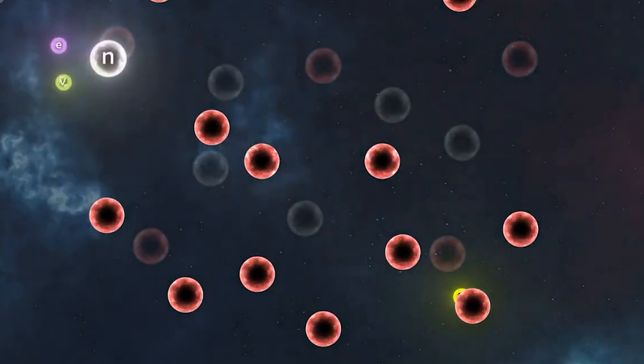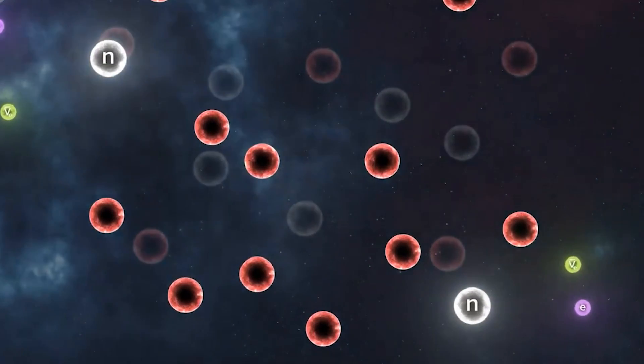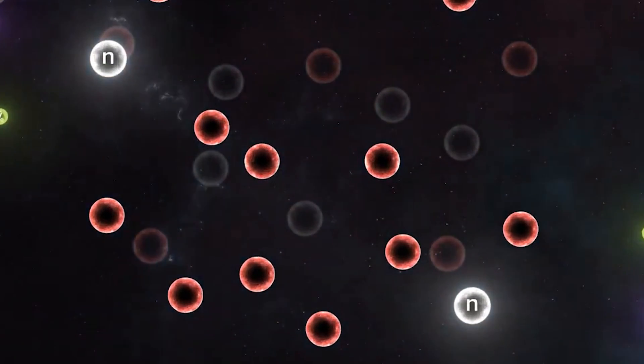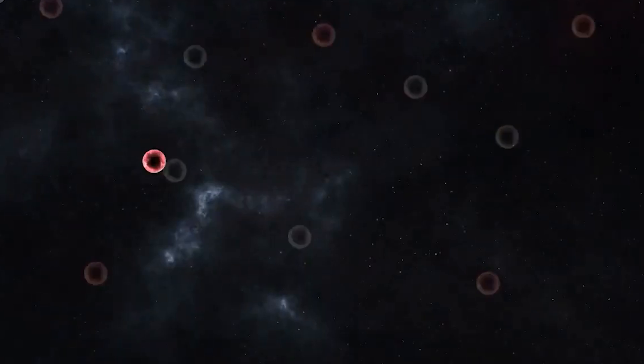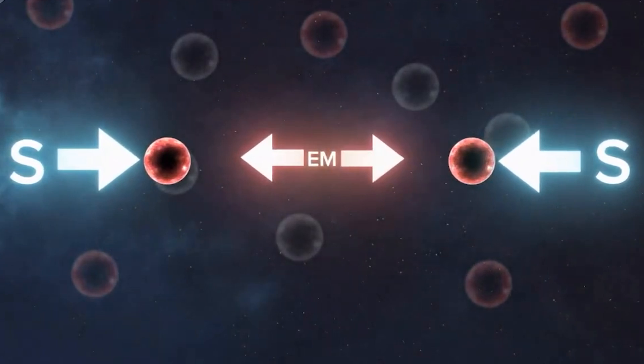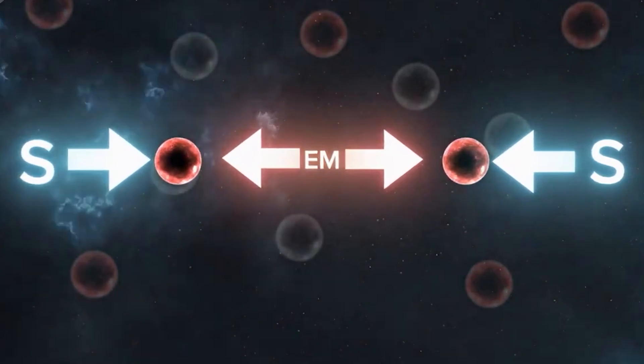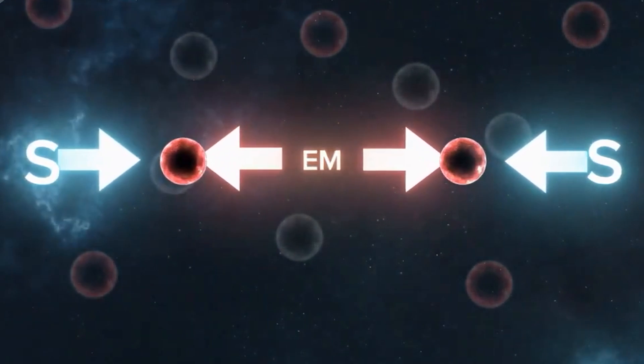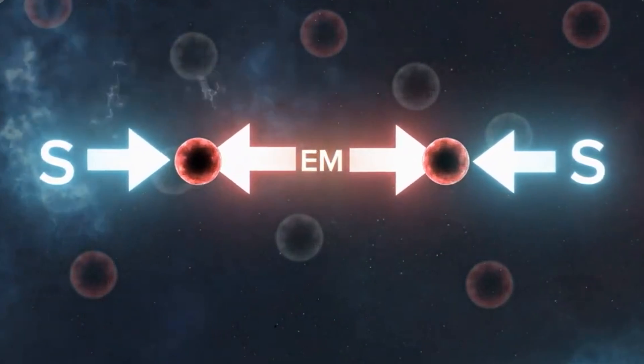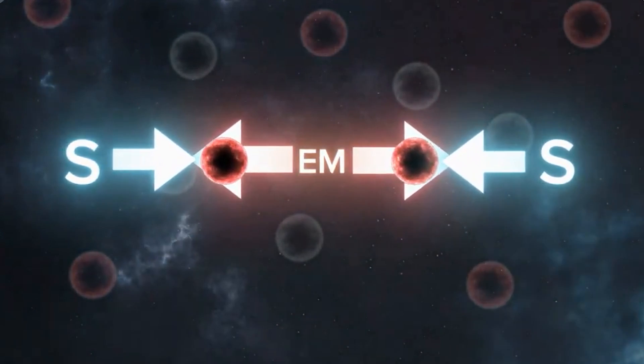If a nucleus becomes too large, the strong force can't hold it together, making various types of nuclear decay inevitable. Even though the strong force fades quickly over distance, its strength remains consistent within the short range where it operates. However, the electromagnetic force grows stronger as two electric charges get closer together. This means that electromagnetism can overpower the strong force if protons are too close, leading to instability in the nucleus.